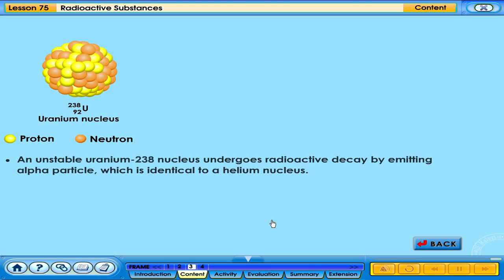An unstable uranium-238 nucleus undergoes radioactive decay by emitting alpha particle which is identical to a helium nucleus. Uranium nucleus contains 92 protons and the nucleon number is 238.